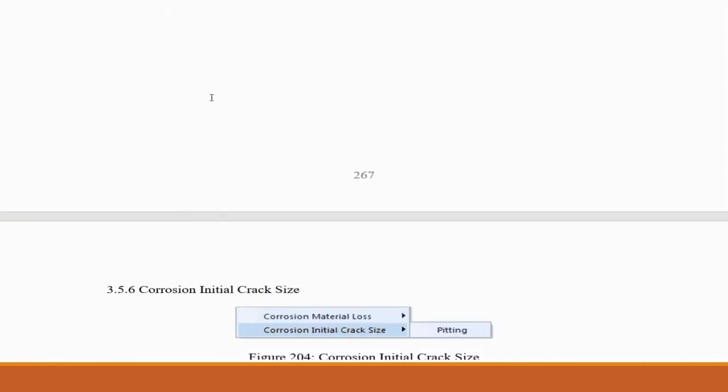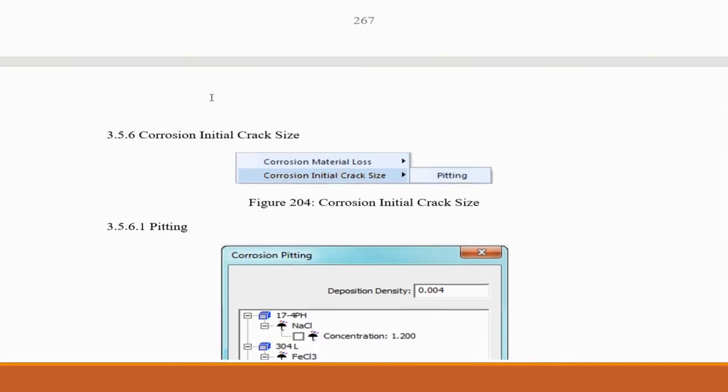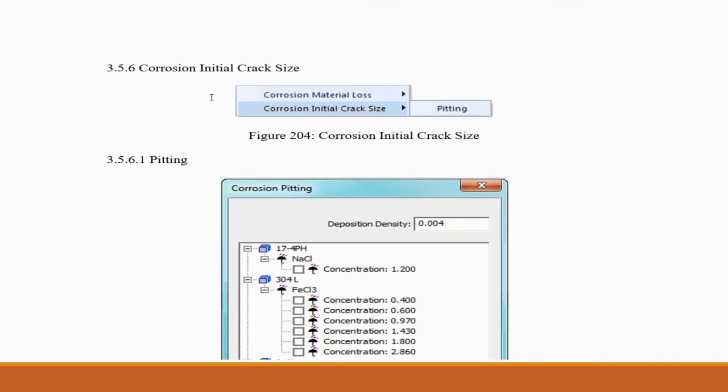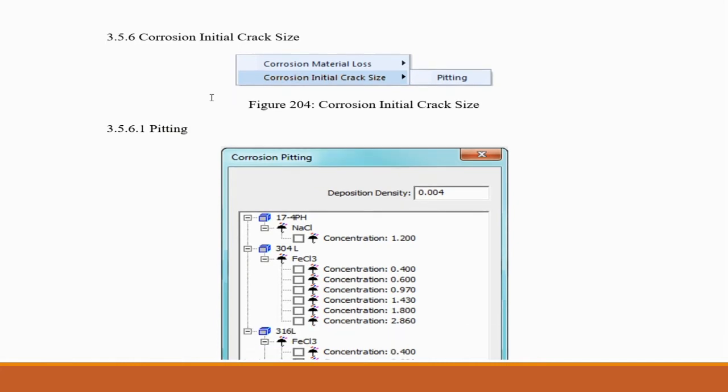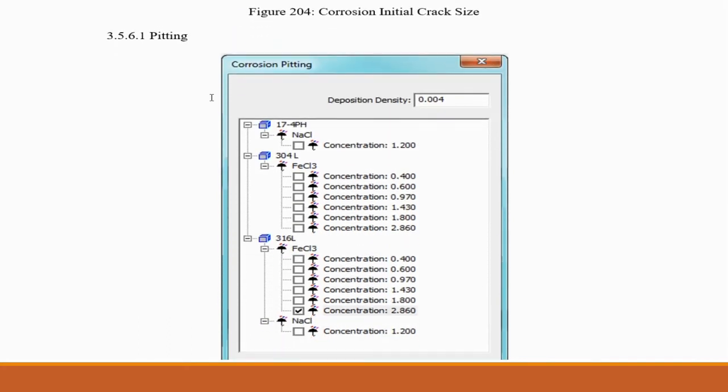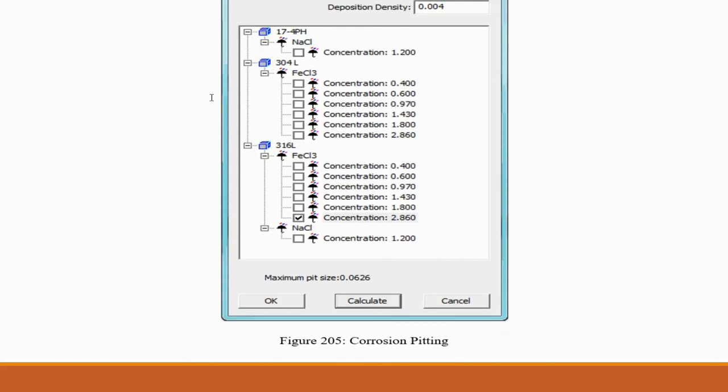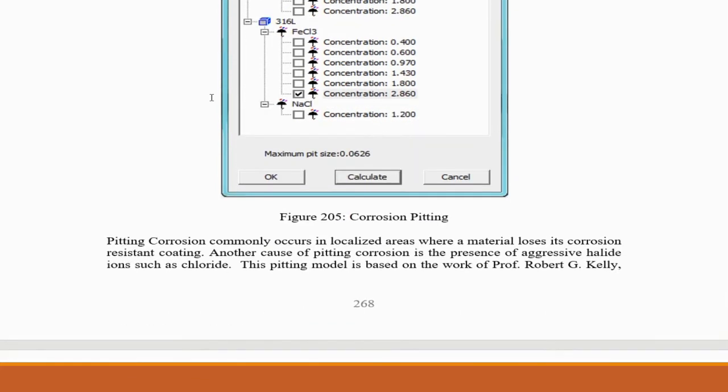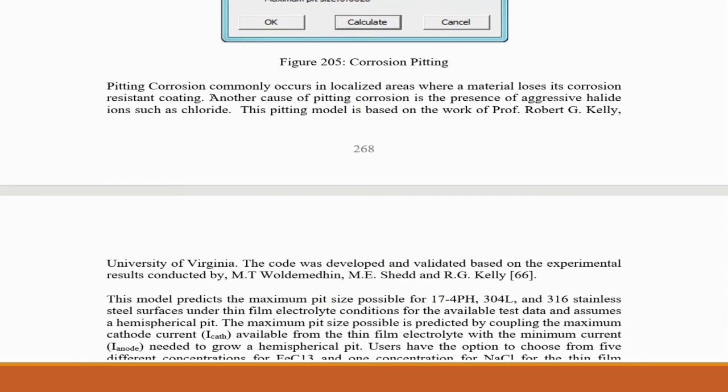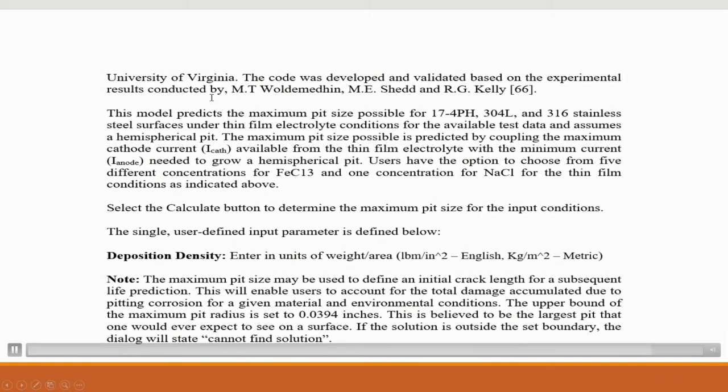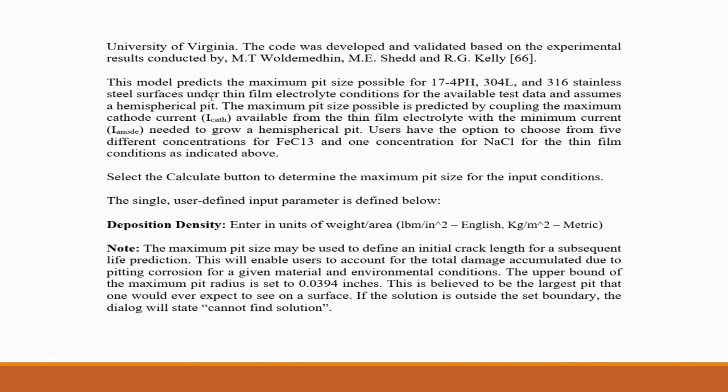The last model is the maximum pit size. This model predicts the maximum pit size as possible for 17-4 pH, 304L, and 316L stainless steel surfaces under thin film electrolyte condition. Users have an option to choose from five different concentrations. The maximum pit size may be used to define the initial crack length for a life prediction.